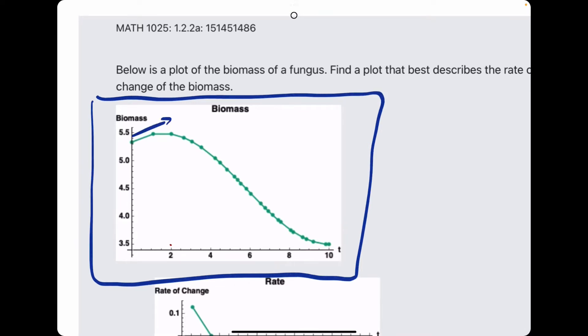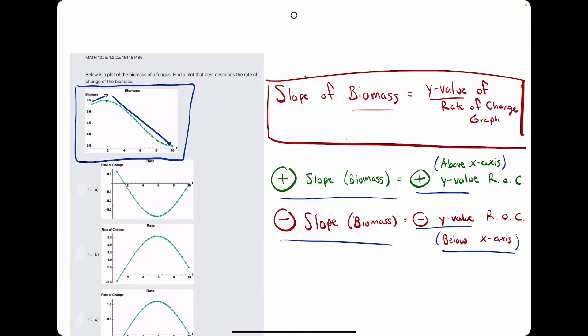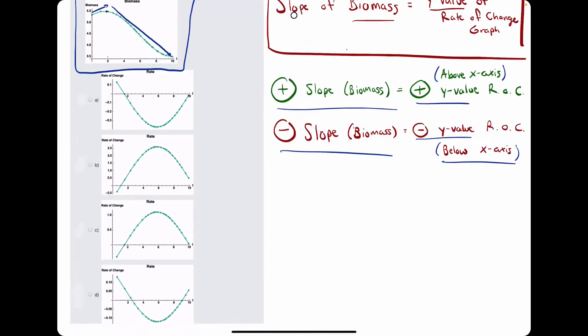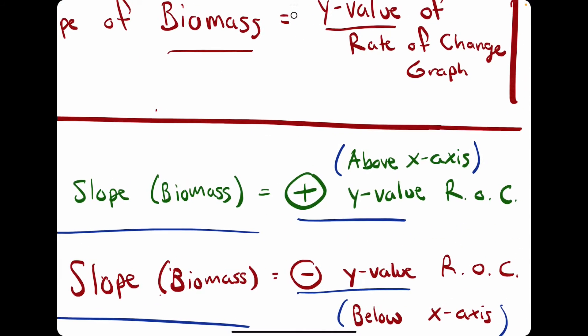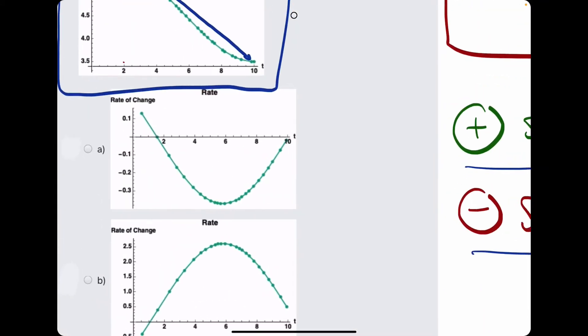It looks like it starts positive, and then really right around 2, it changes to a negative slope the entire rest of the way. So, what we're looking for is if it starts with that positive slope from about 0 to 2, we're looking for the function down here, the rate of change function, that lies above the x-axis from about 0 to 2. So, it looks like A starts above the x-axis. That's pretty good.